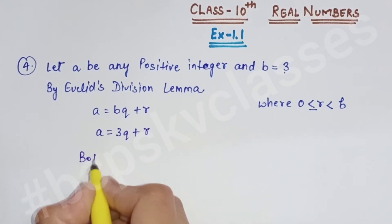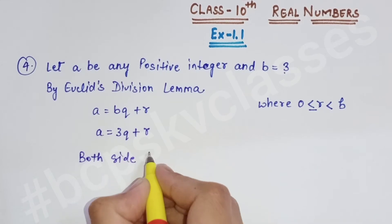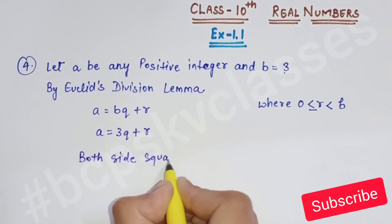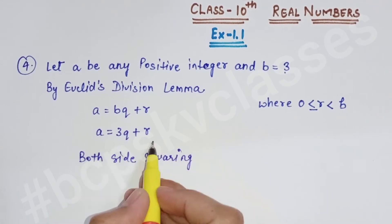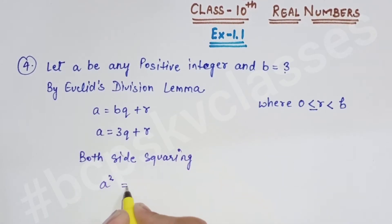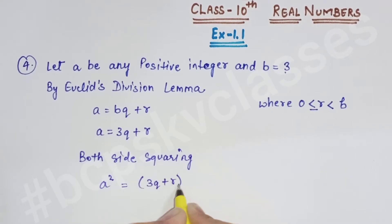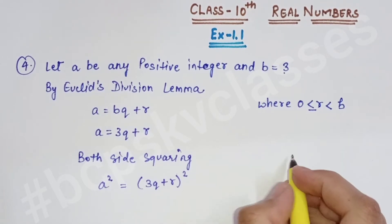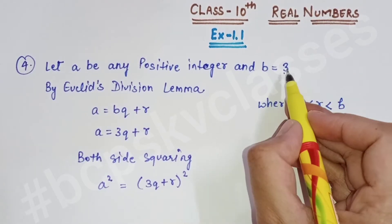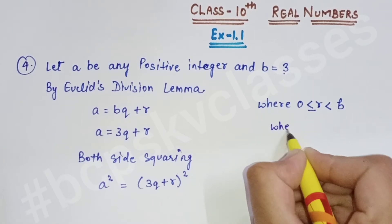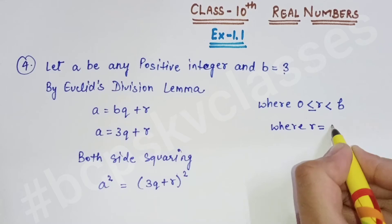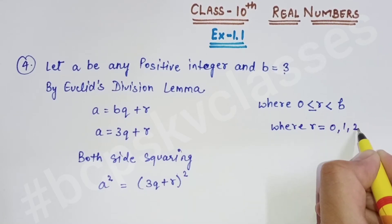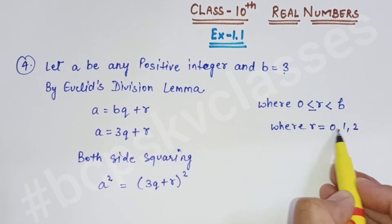Ab dono side squaring karenge, kyunki square karne ke liye question mein kaha hai. Dono side square karne par: a² = (3q + r)². Yahan r ki value put karni hai where r = 0, 1, 2. 2 tak kyunki b = 3 hai, to 3 se chhote cases banenge — 3 cases honge.